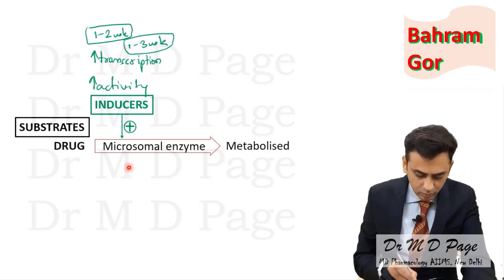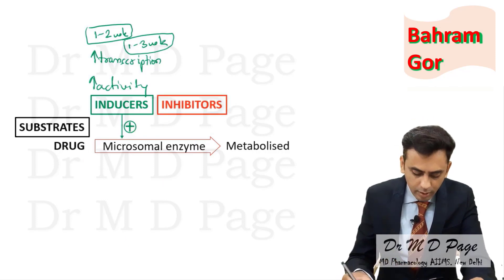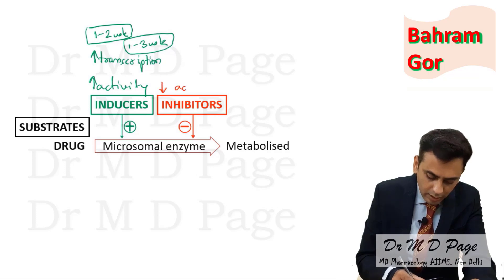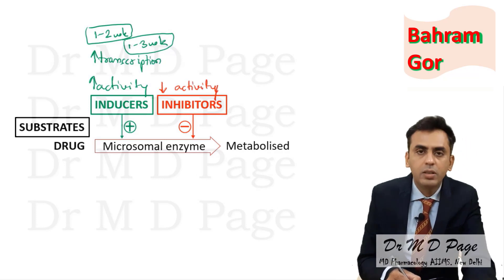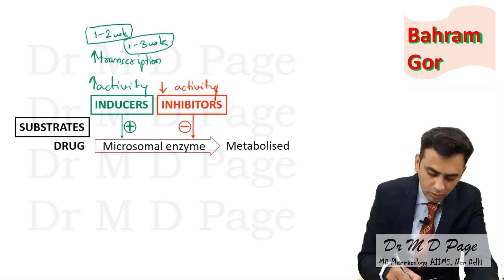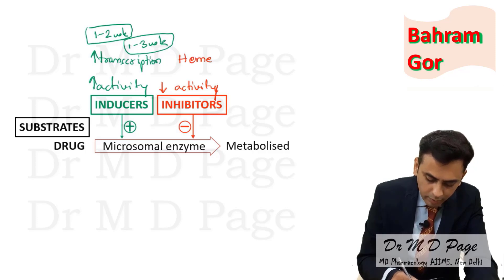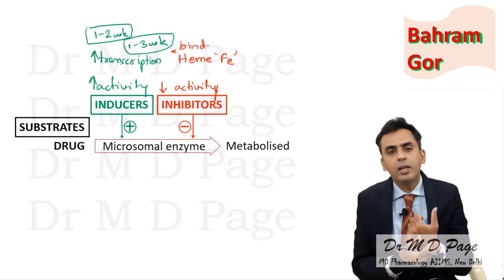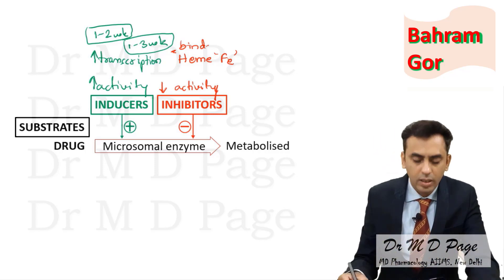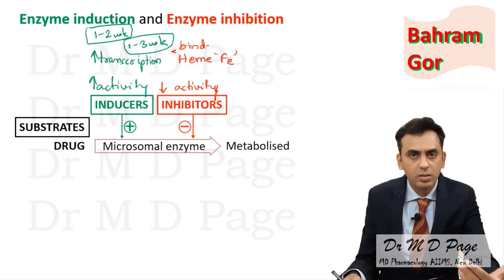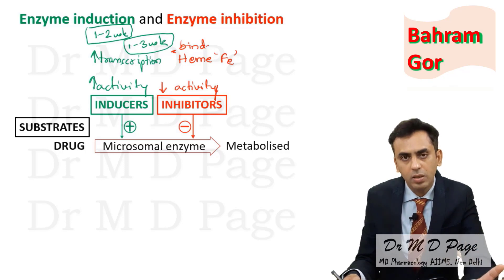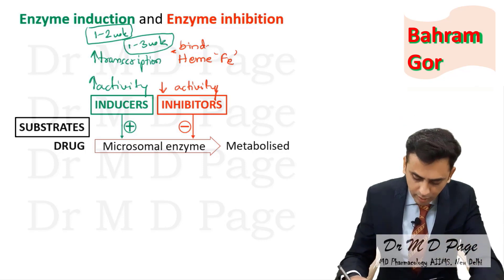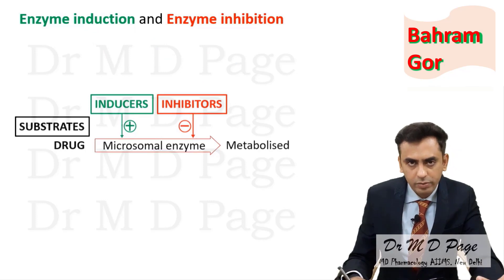Microsomal enzymes are inducible. There can also be inhibitors which decrease enzyme activity. Inhibitor drugs bind to the heme iron of the enzyme, thereby inhibiting its activity. This is known as enzyme induction or enzyme inhibition, and it is important for CYP enzymes and other microsomal enzymes.